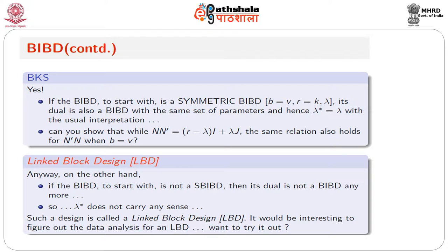So you have a linked block design — a design where the design itself is not a BIBD, but if you interchange the roles of blocks and treatments, then it becomes a BIBD. What would be the data analysis for this block design when you identify it as a linked block design? The steps would be: first, compute block sum of squares adjusted for treatments; then compute treatment sum of squares unadjusted for blocks; then compute error sum of squares.